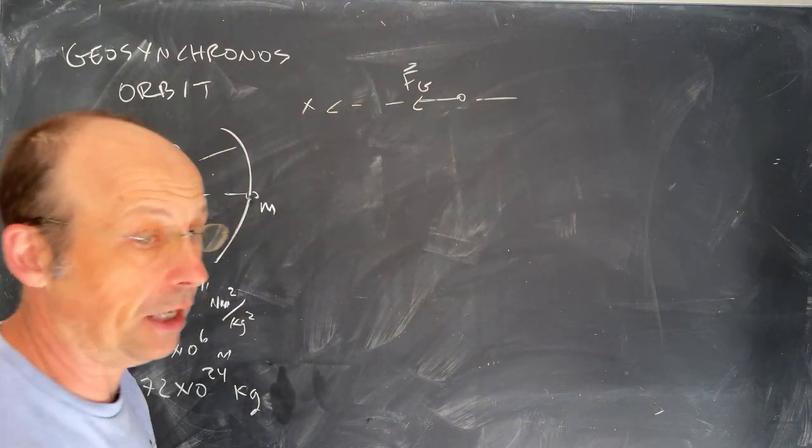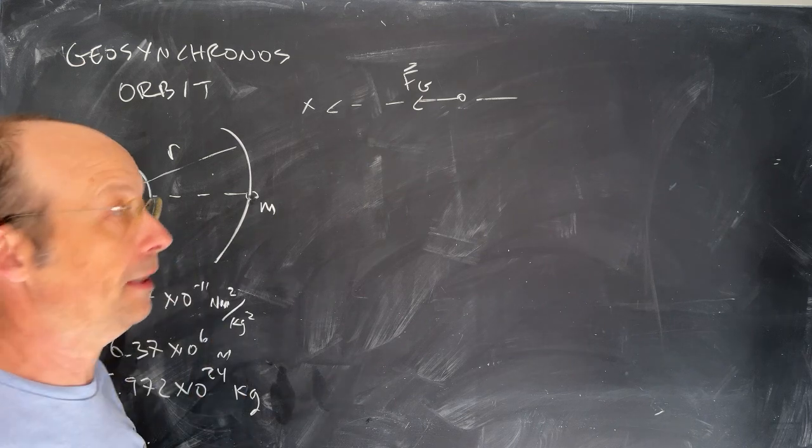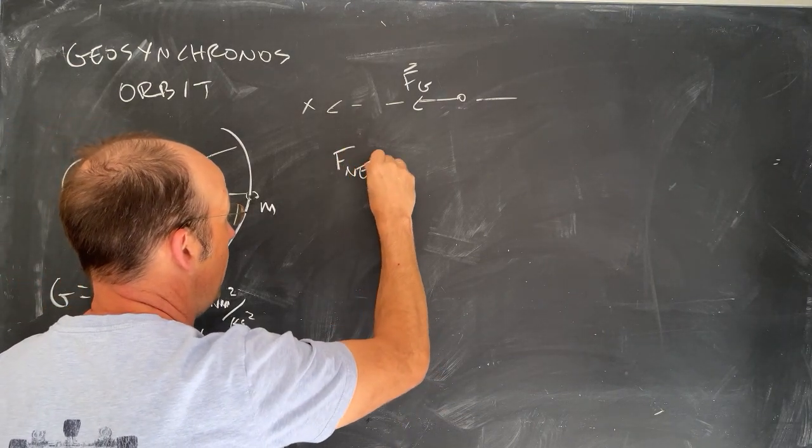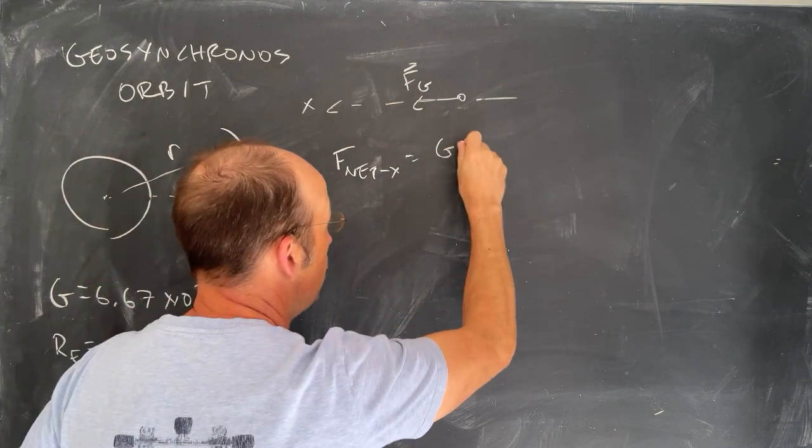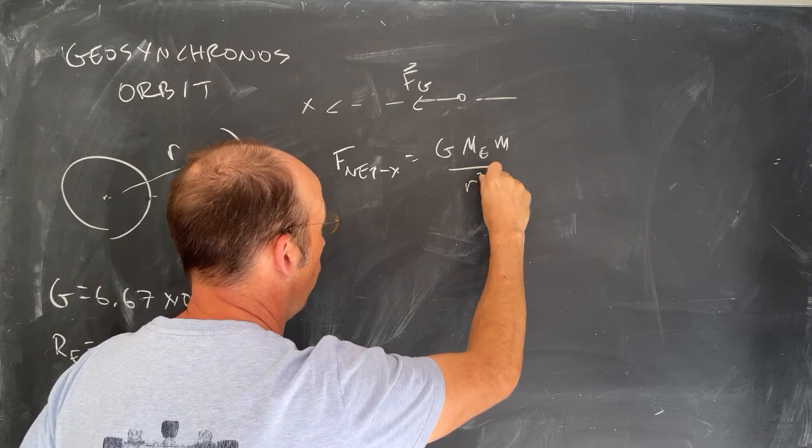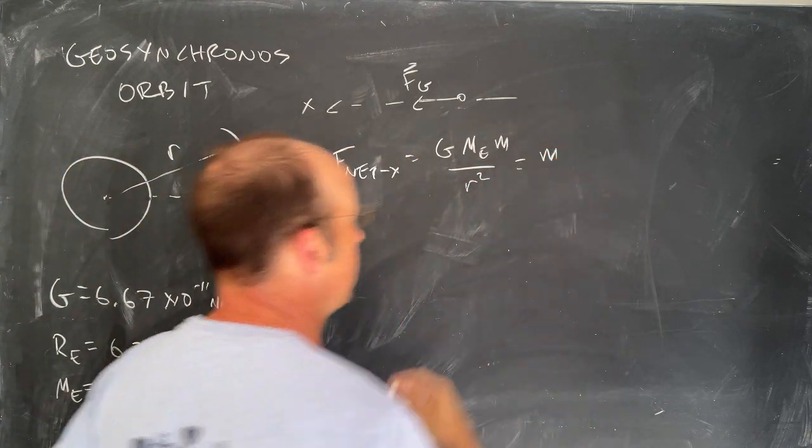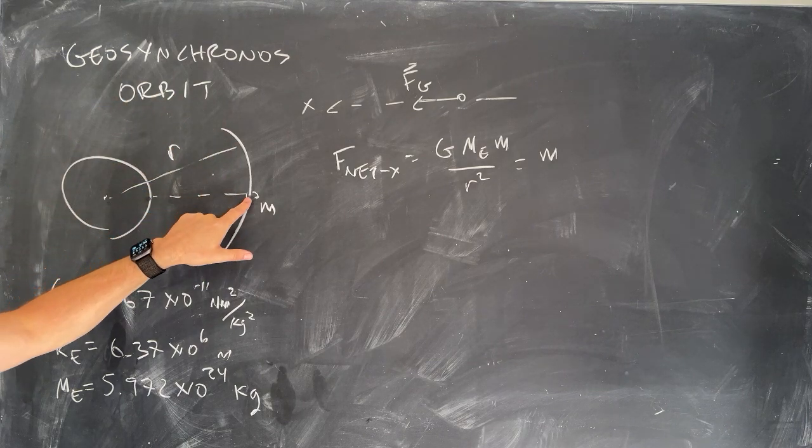I can pick this as my x-axis. I'm actually going to pick this as my positive x-axis. There's nothing wrong with that, but I drew my picture like this, so I'm going to pick that as my positive x-axis. Now I can write F net in the x direction. It's going to be this force, which is G, mass of the earth, mass of the satellite over r squared, and that's going to be equal to the mass times acceleration. But if it's moving in a circular orbit, the acceleration is v squared over r.